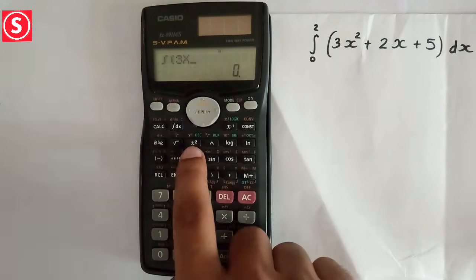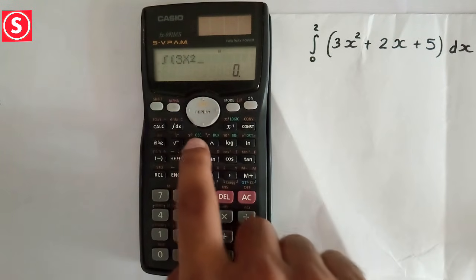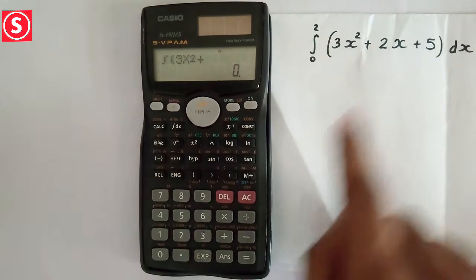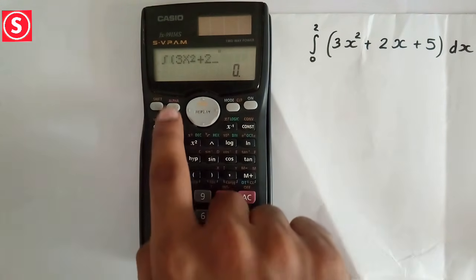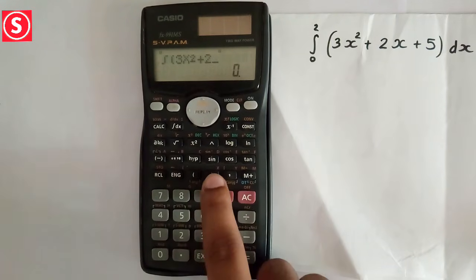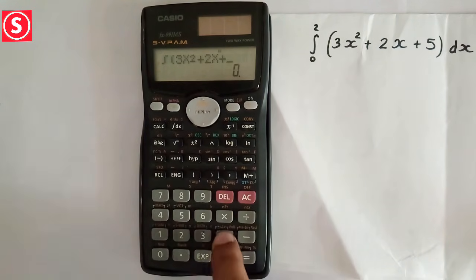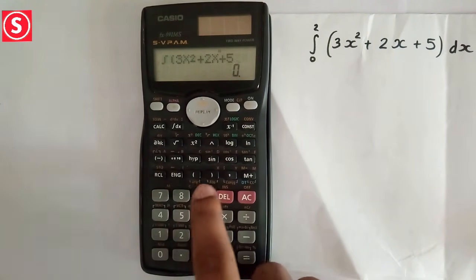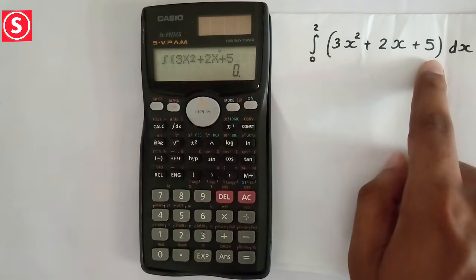For getting x square press on the x square button. Plus 2x, then again alpha, then plus closing bracket, plus 5. Now don't close the bracket. Instead of closing the bracket we need to put the limit, 0 and 2.